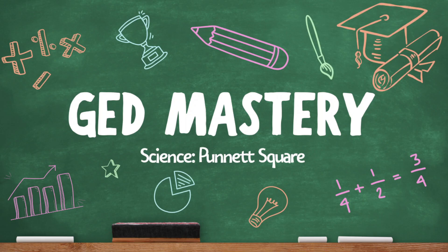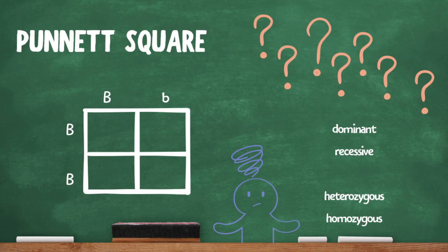Welcome to GED Mastery. Today let's learn how to use a Punnett square. So what is a Punnett square? It's a tool you can use to determine the probability of traits in offspring. You fill it out with each parent's genotype, shown by these pairs of letters at the top and on the side of the Punnett square.